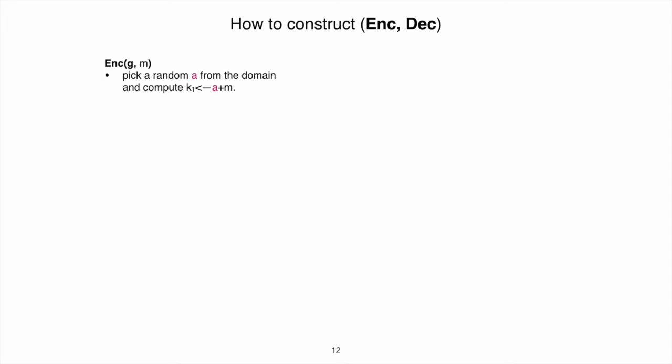To encrypt a message m, we sample a random element a from the domain and compute a one-time pad — more precisely, we use the hardcore predicate of the trapdoor function, but for simplicity let's say we use a as a key of a one-time pad to encrypt m. Then we evaluate g(a). The ciphertext is simply these two elements: the one-time pad encryption of the message using a, and the evaluation g(a). For decryption, we can invert the second element of the ciphertext using the trapdoor to retrieve a, and once we have a, we can remove the one-time pad key and recover the message.